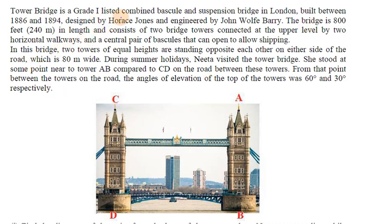Tower Bridge is a Grade 1 listed combined bascule and suspension bridge in London, built between 1886 and 1894, designed by Horace Jones and engineered by John Wolfe Barry.